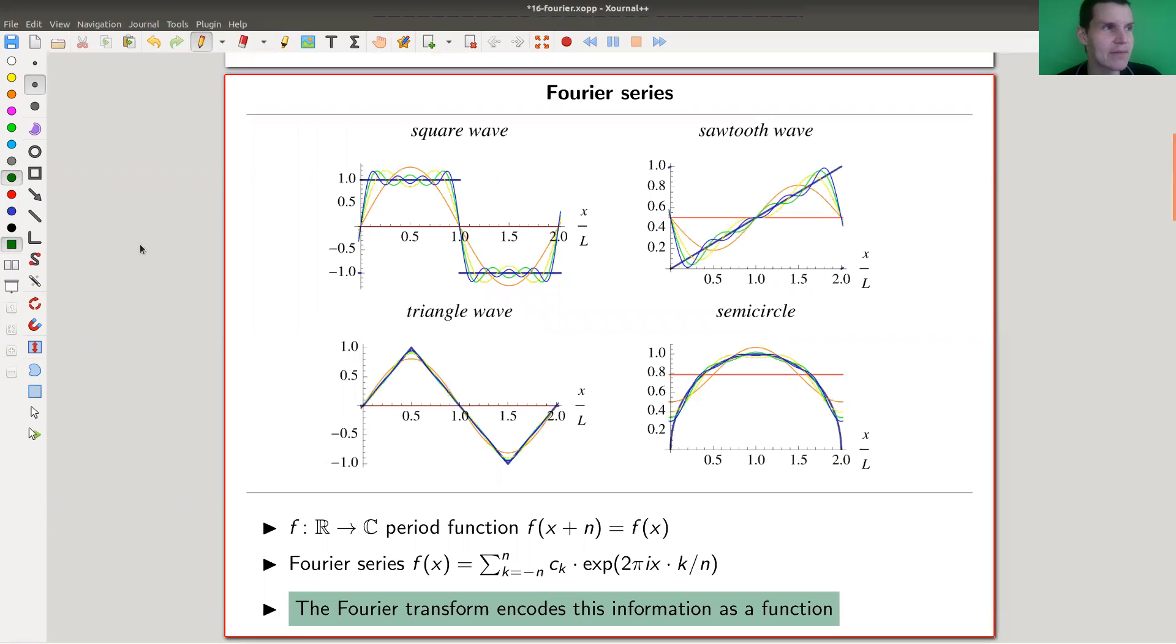So Fourier analysis starts with this idea that you can approximate a periodic function. Here my periodic function is the square wave function - it goes like this and this and this. You can approximate it by cosine and sine just using this formula here.